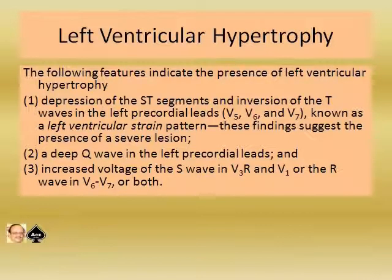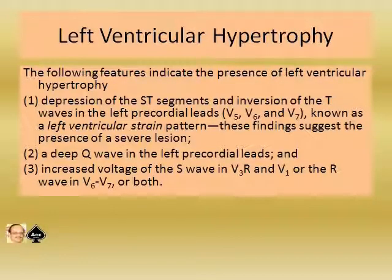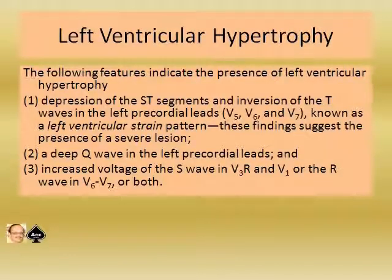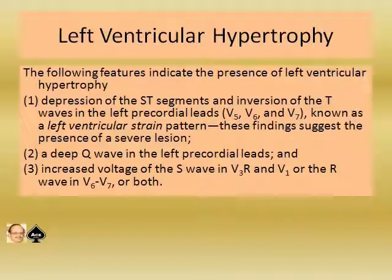Now moving to left ventricular hypertrophy. The following features indicate its presence: one, depression of the ST segment and inversion of the T wave in the left precordial leads V5, V6, and V7, known as the left ventricular strain pattern, suggesting severe disease; two, deep Q wave in the left precordial lead; three, increased voltage of the S wave in V3R and V1, or increased voltage of the R wave in V6, V7, or both.